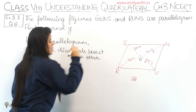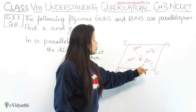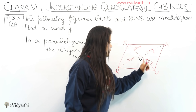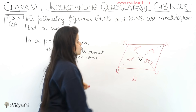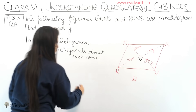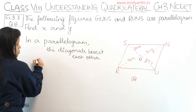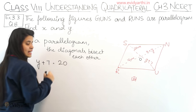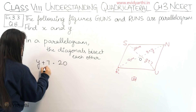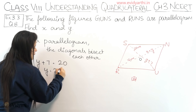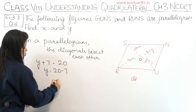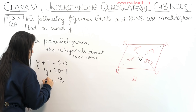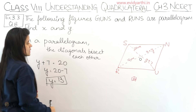Bisect each other means OU equals OS and ON equals OR. So first let's find the value of Y. OU equals OS means Y plus 7 equals 20 centimeters. Therefore Y equals 20 minus 7, which is 13. So Y equals 13 centimeters.